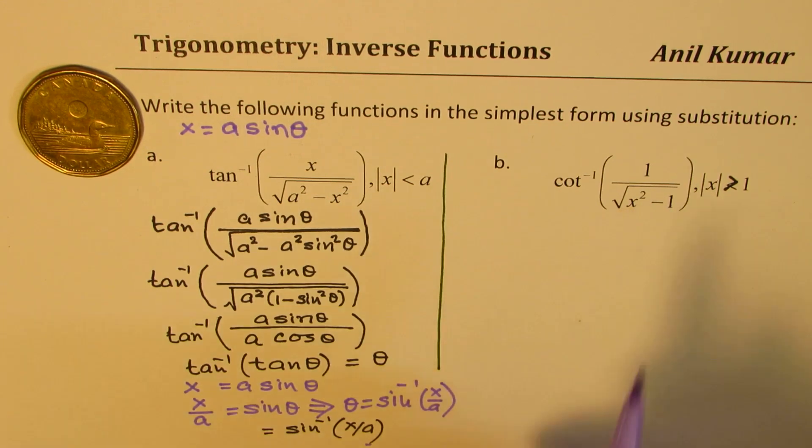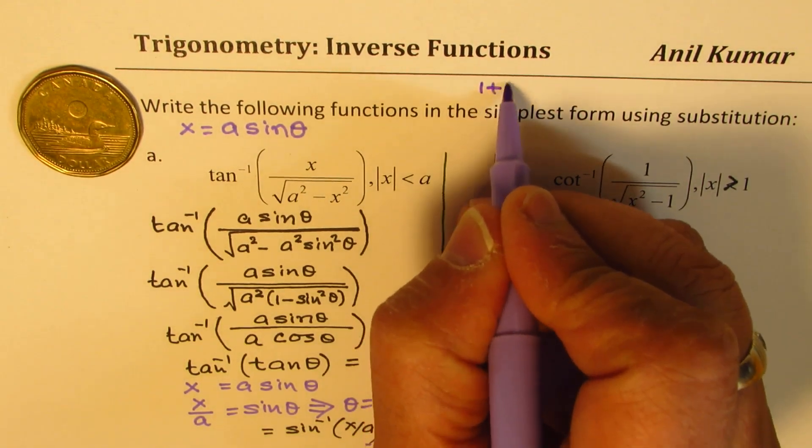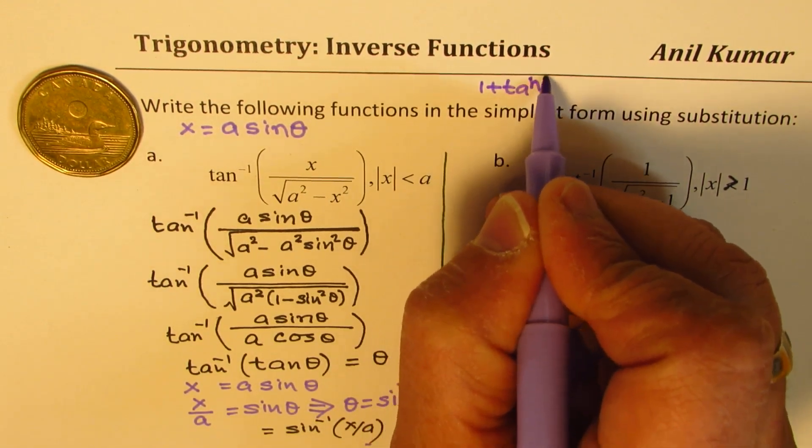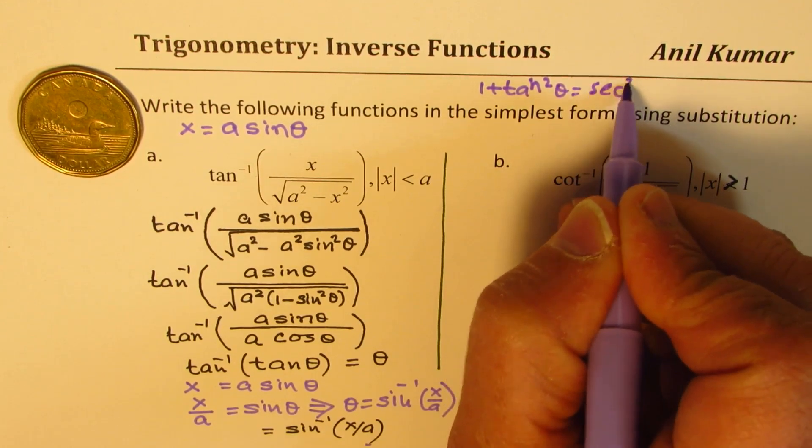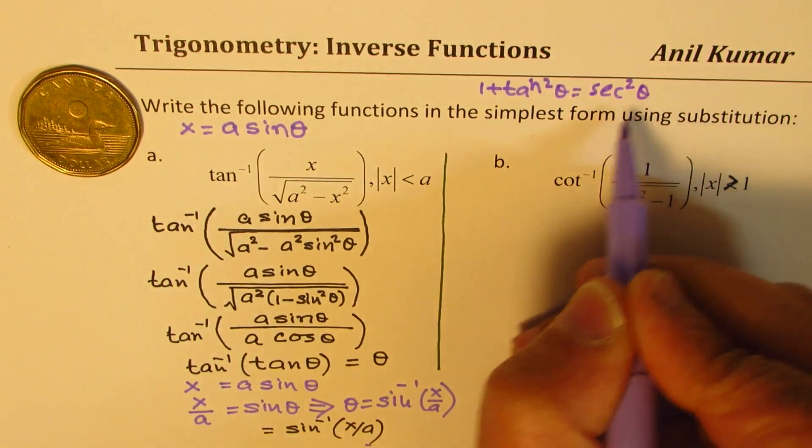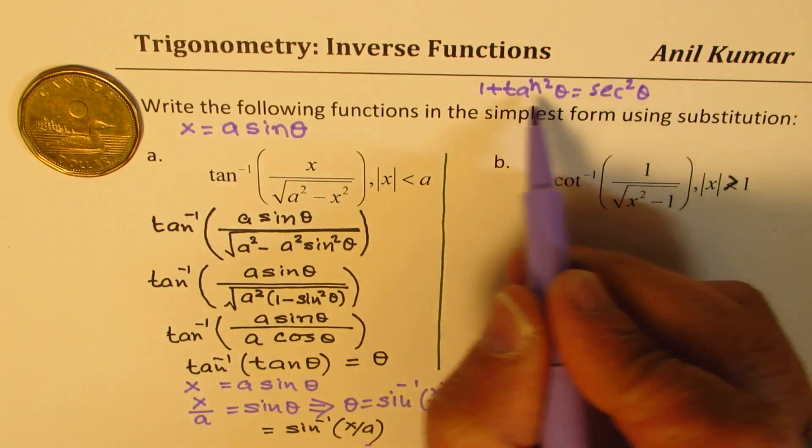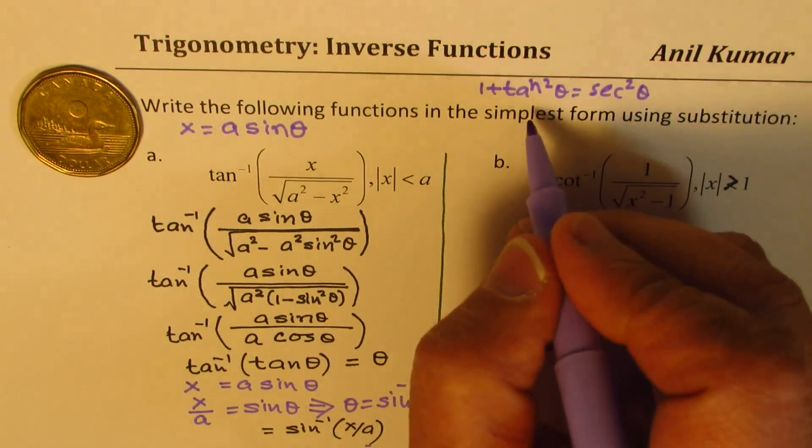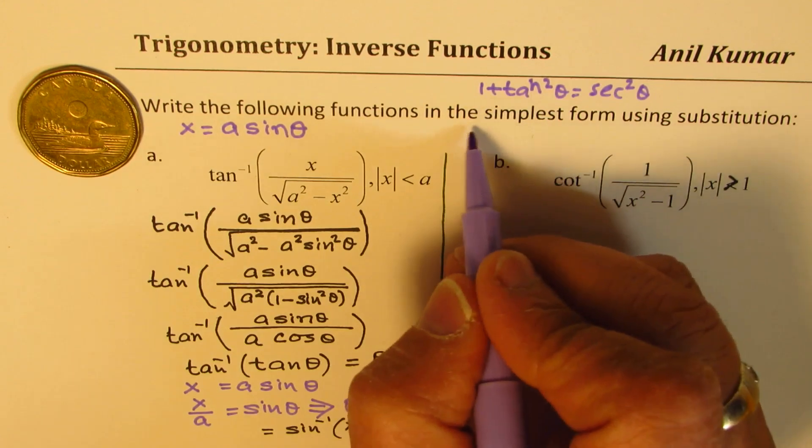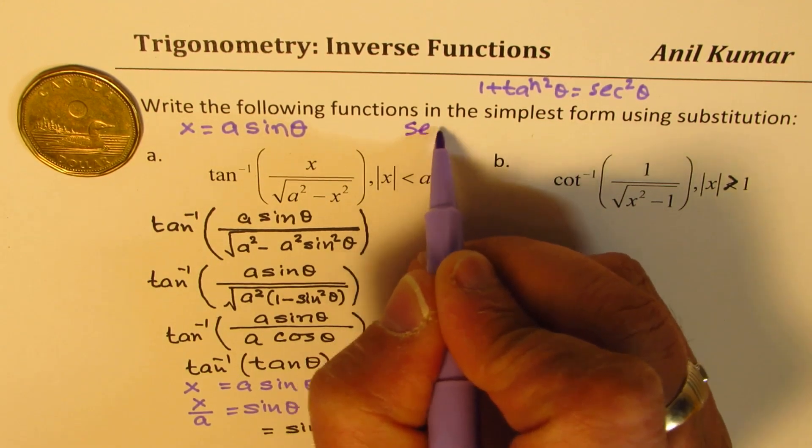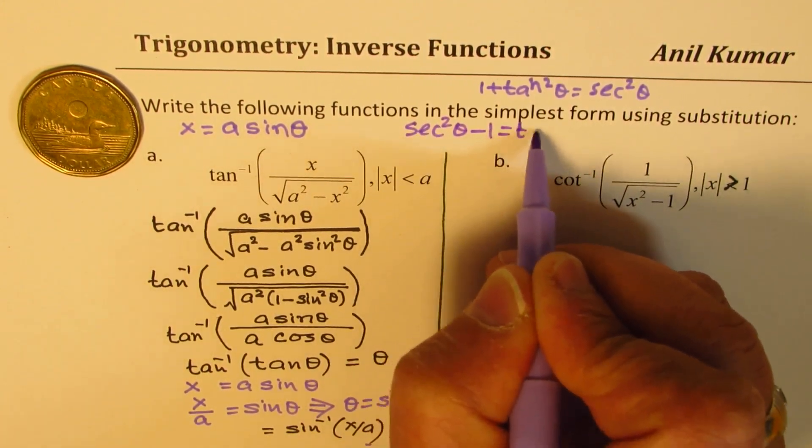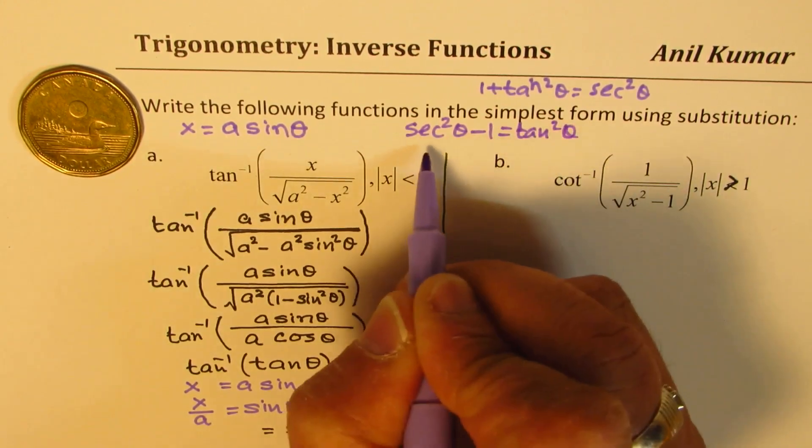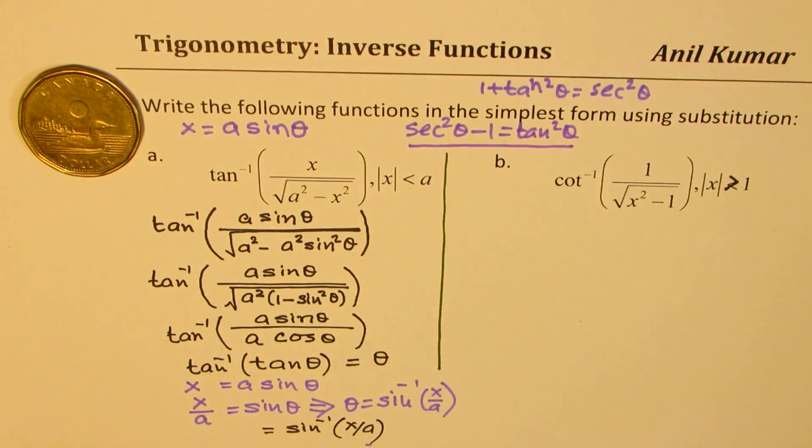So you remember the formula 1 plus tan square theta equals to secant square theta or you'd also write secant square theta minus 1 as tan square theta. Or you could write secant square theta minus 1 is tan square theta. So that is the strategy. You can see this.